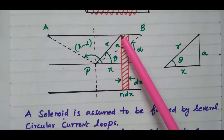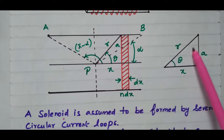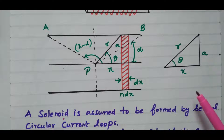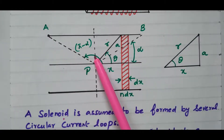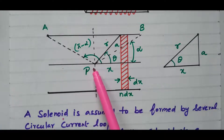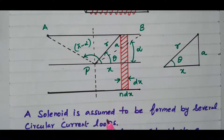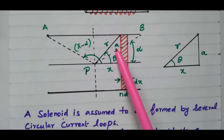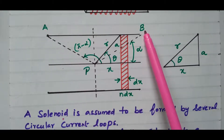The distance between point P and the end is R metres. This distance is a metres. This angle is theta. A separate triangle is drawn showing theta, x, R, and a. The angle between point P and point B is alpha. Similarly, the angle between point P and point A is pi minus alpha.